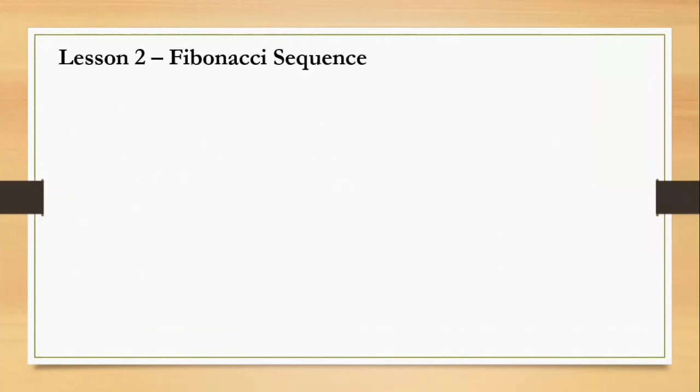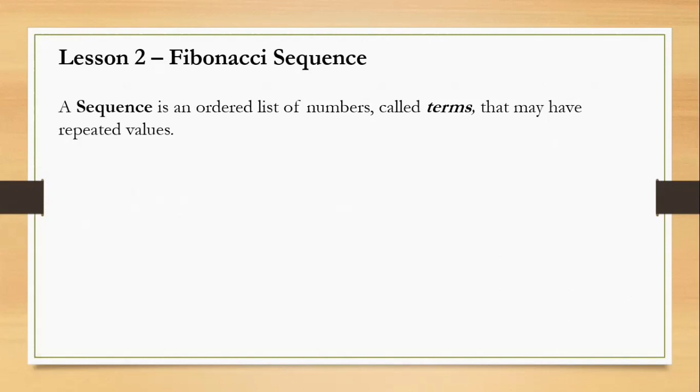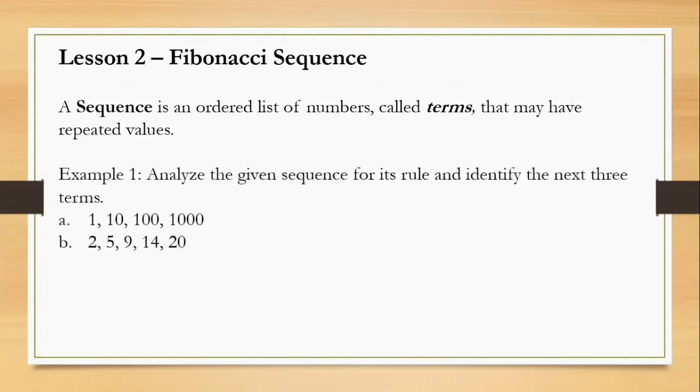Next. We are now in lesson 2, the Fibonacci sequence. What do you mean by that? Let's define first what is a sequence. A sequence is an ordered list of numbers called terms. In the previous examples, the numbers are called the terms that may have repeated values.